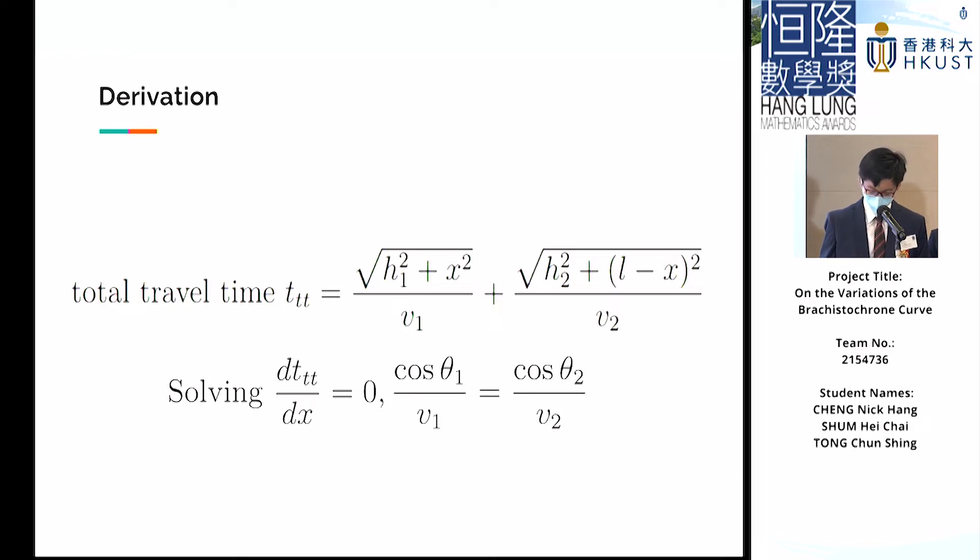Obtaining cos(θ1)/v1 = cos(θ2)/v2. Now, if we take the limit of each medium's thickness to zero and the number of media to infinity, we can conclude that cos(θ)/v, where θ and v are the angle of inclination and the velocity of the object at each point on the path, is constant.